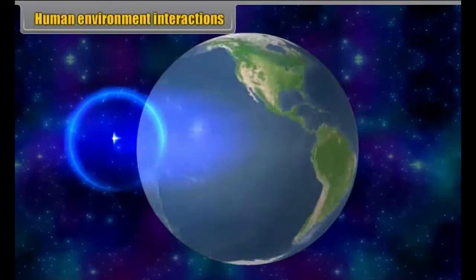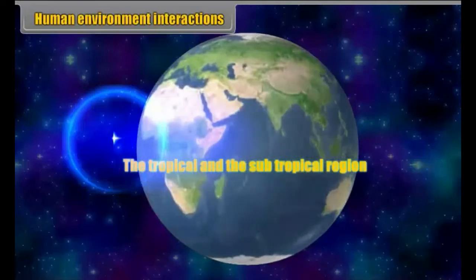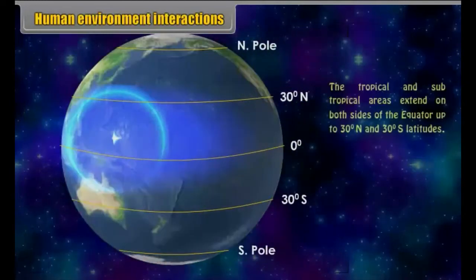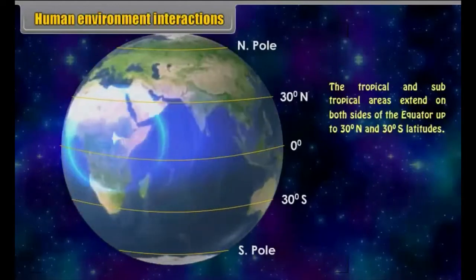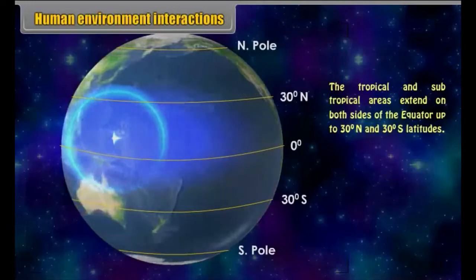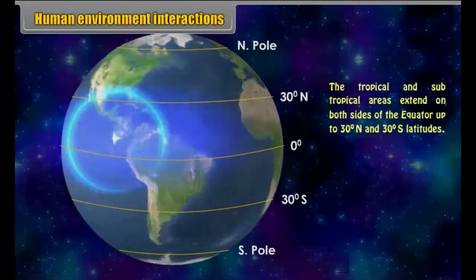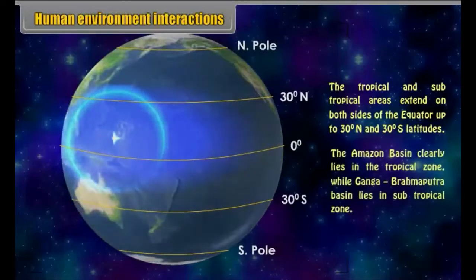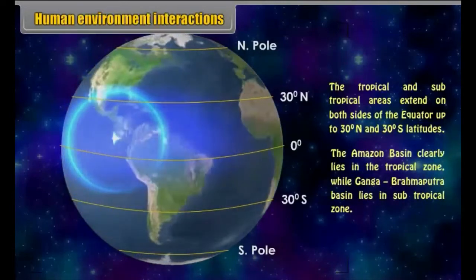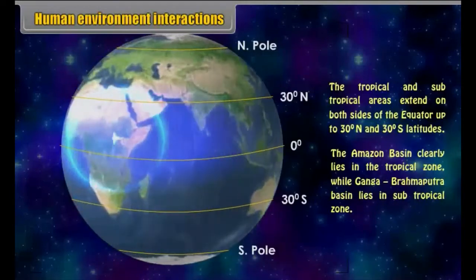Human Environment Interactions: The Tropical and the Subtropical Region. The tropical and subtropical areas extend on both sides of the equator up to 30 degrees north and 30 degrees south latitudes. The Amazon Basin clearly lies in the tropical zone while the Ganga-Brahmaputra Basin lies in the subtropical zone.